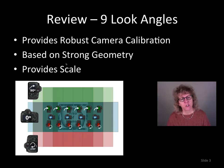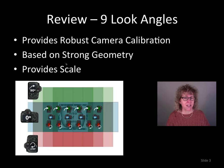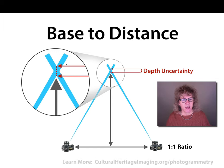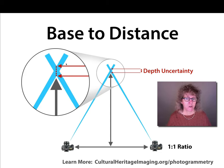As a review: when collecting photogrammetric data, we want to have nine look angles on the subject in all areas. That gives us good strong geometry and provides information for good camera calibration, especially if you do landscape, 90-degree, and 270-degree images. If we're working on turntable subjects we can also do this kind of data collection to add scale to our model. The base-to-distance ratio — how far we translate the camera between images relative to the distance to the subject — and keeping a two-thirds overlap affects the software's ability to determine depth uncertainty.